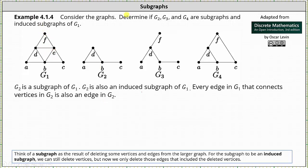Now take a look at the graph G3. Once again, notice the set of vertices of G3 is a subset of the set of vertices of G1, and the set of edges of G3 is a subset of the set of edges of G1. This indicates G3 is a subgraph of G1. Notice to form the graph of G3 from G1, we delete vertex E, as well as the edges EF, DE, BE, EC, and AB. Now notice that G3 is not an induced subgraph of G1 because edge AB has been removed to form G3, and edge AB does not include the deleted vertex, vertex E.